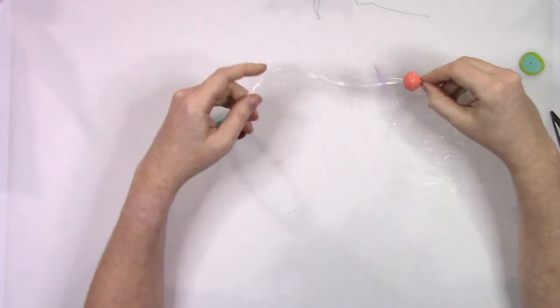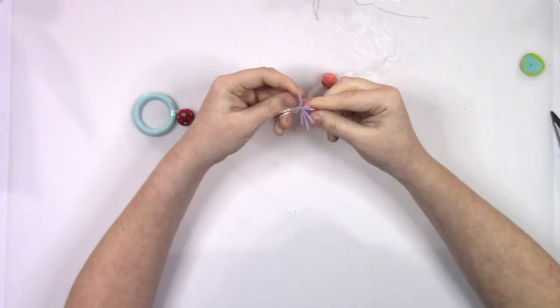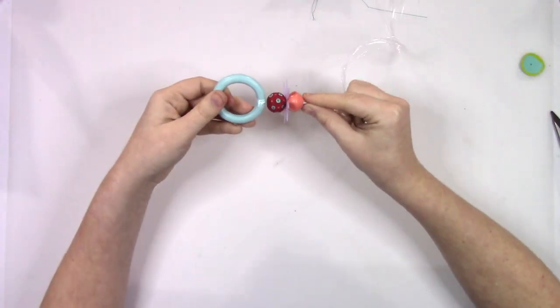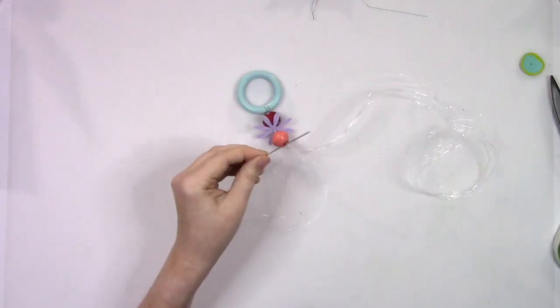Make sure that all of them are pushed all the way to the top. If you have any tangles in your string, now is the time to get that figured out, and then we are going to start adding our beads to the different legs.